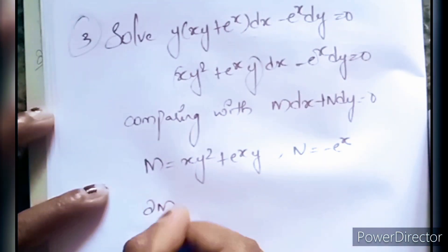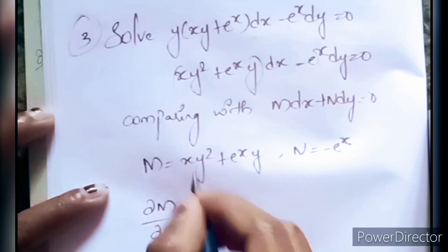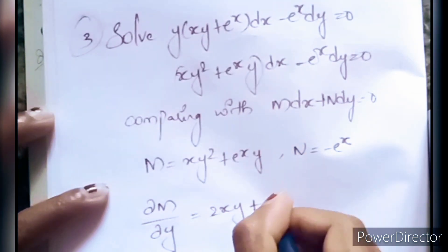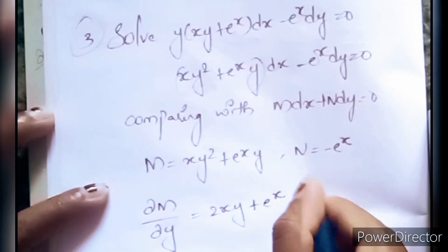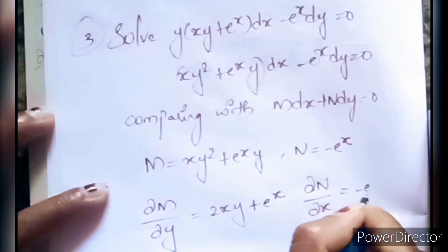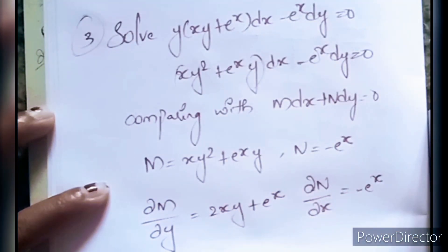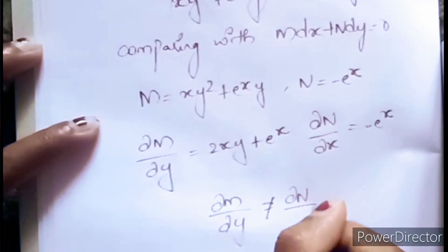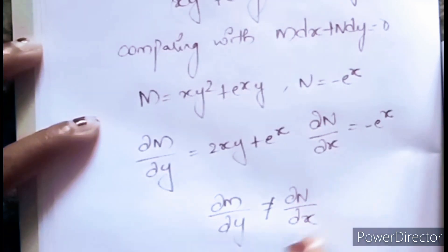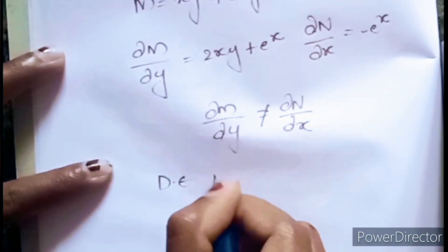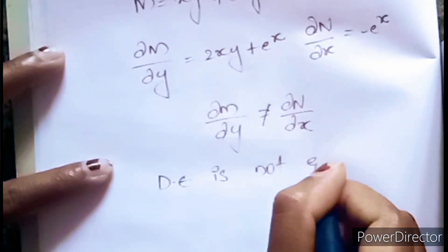Partially differentiating M, ∂M/∂y becomes 2xy + eˣ. Now ∂N/∂x becomes −eˣ. Here ∂M/∂y is not equal to ∂N/∂x, so the given DE is not exact.